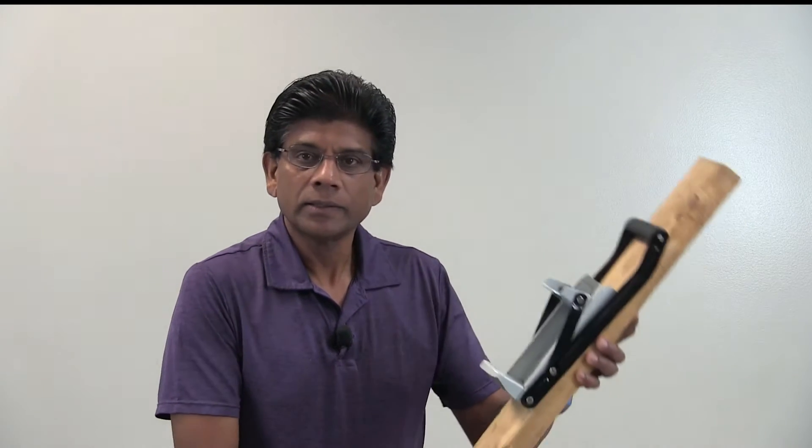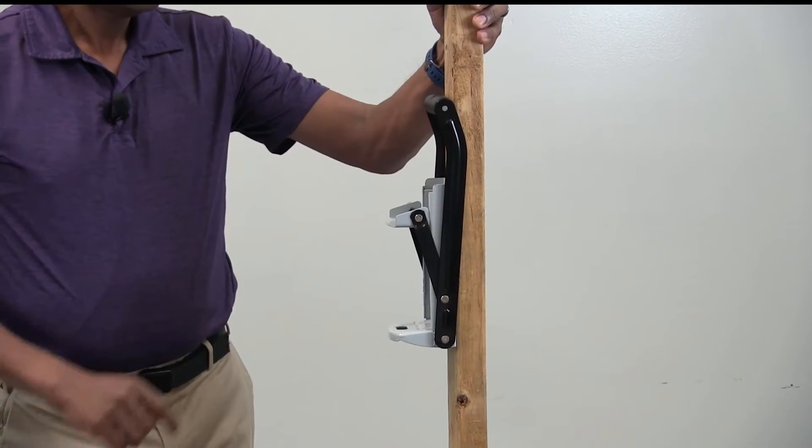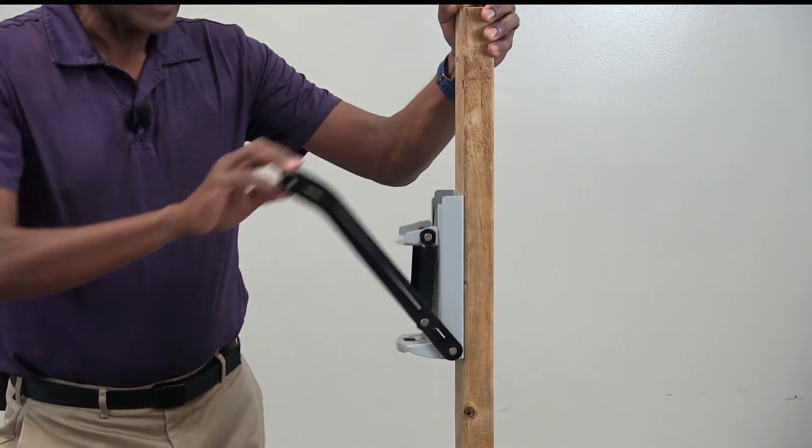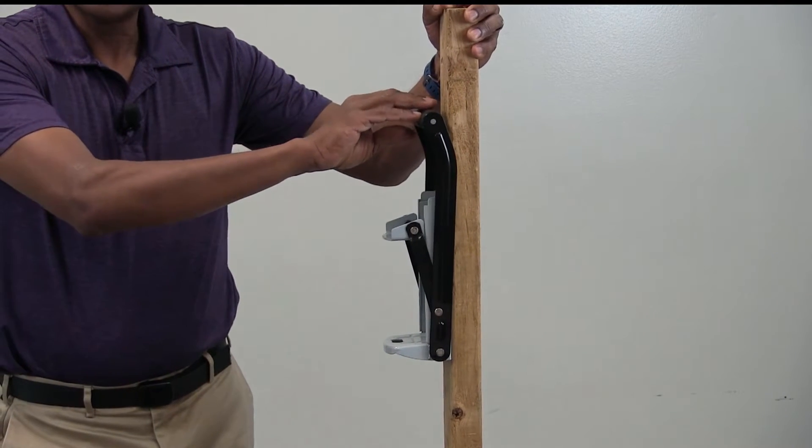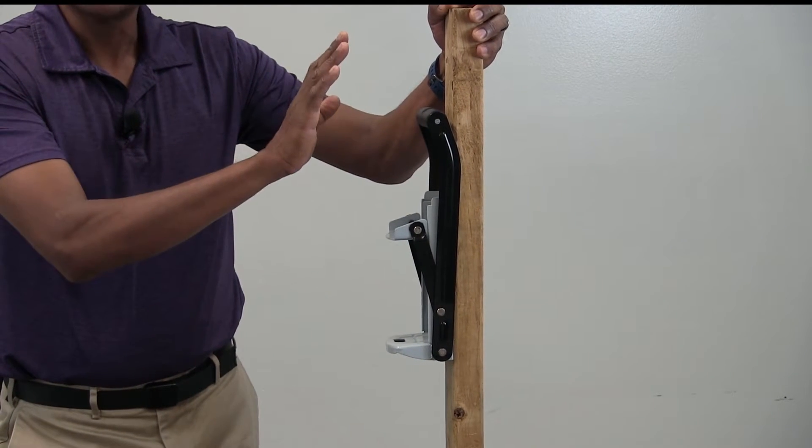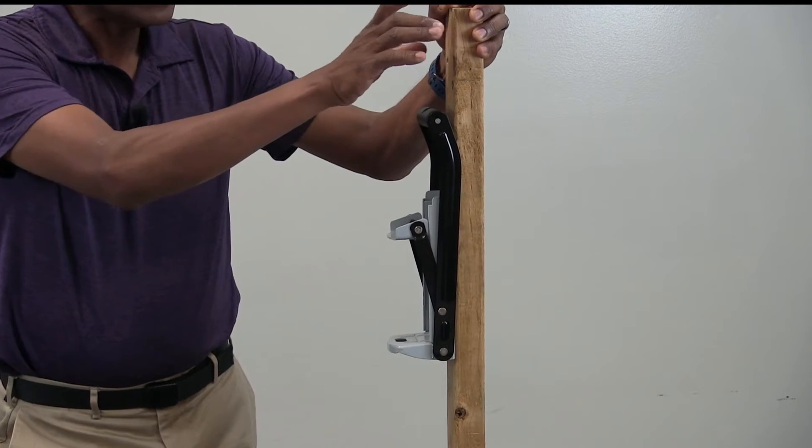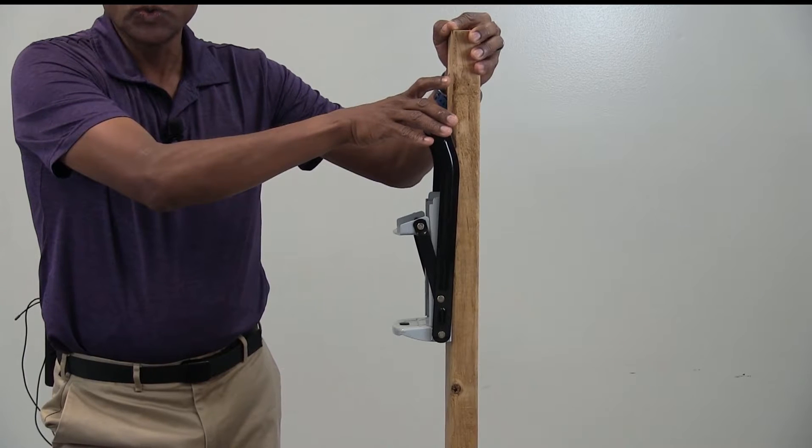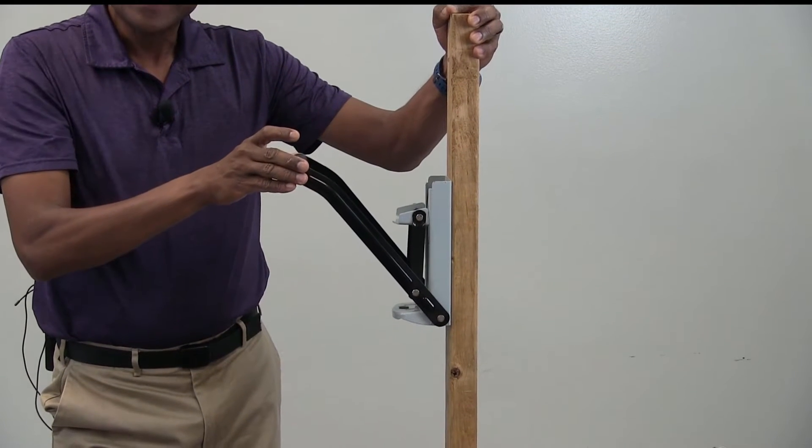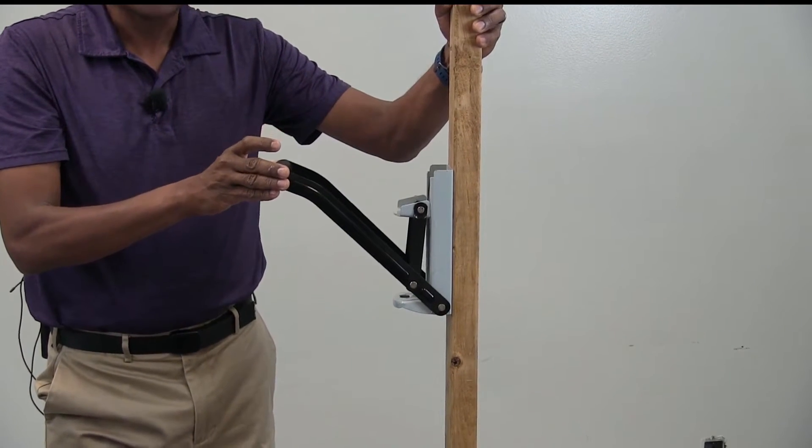Now let's take a look at another mechanism. Here is a can crusher. This can crusher mechanism is typically mounted to a wall. In this case, I have got this mounted to a wooden frame so I can show you a demonstration.